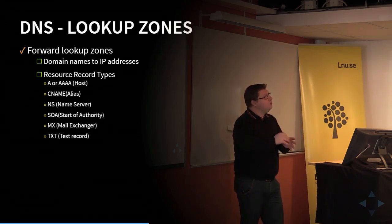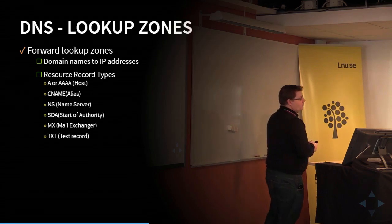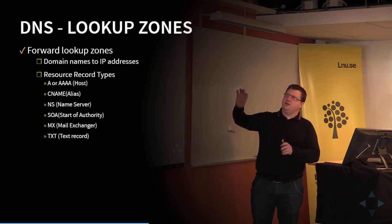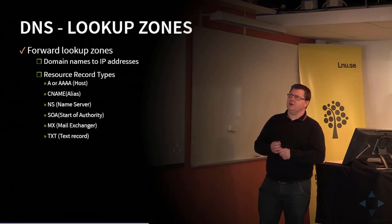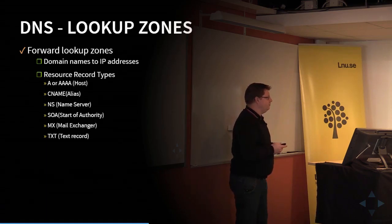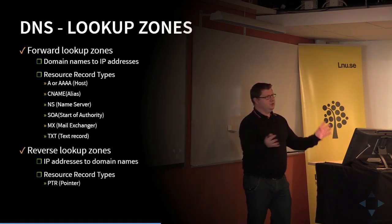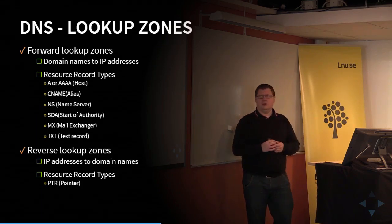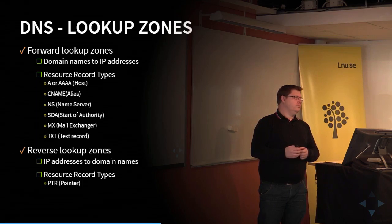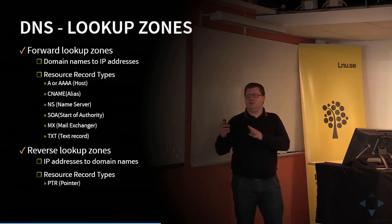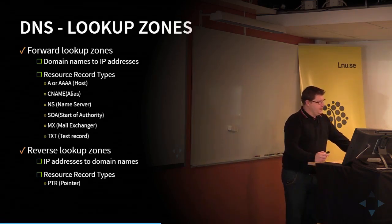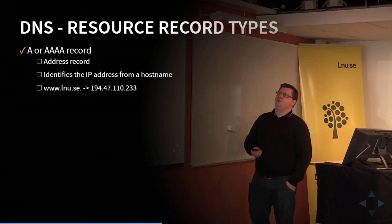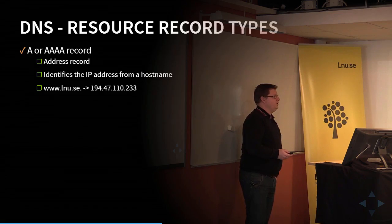We have two different types of lookup zones. The first is the forward lookup — when you have a name and want an IP address. We have different resource records for the forward lookup, and there are quite a lot more record types than we'll cover, but these are the ones we usually work with. Then we have the reverse lookup zone — when you have an IP address and want a domain name, or FQDN. Those records are called pointer or PTR records. You usually don't use that as much.